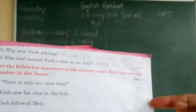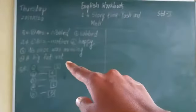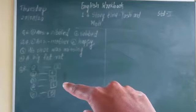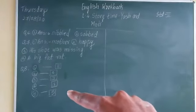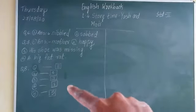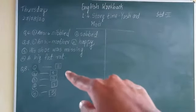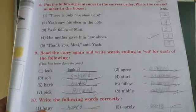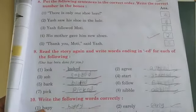In the boxes you have to write which sentence is first, which is second, which is third, which is fourth, and which is fifth. Can you see your answers? After that is question number nine.